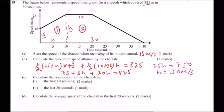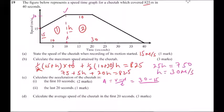Part c: calculate the acceleration of the cheetah. Part c(i): in the first 10 seconds. Acceleration equals (v minus u) over t. The final velocity is 30 meters per second, the initial velocity is 15 meters per second, and time is 10 seconds. So acceleration equals (30 minus 15) divided by 10, which gives 1.5 meters per second squared.